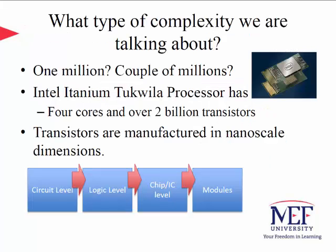So what type of complexity are we talking about? Well, an Intel Itanium processor with four cores has over two billion transistors. Transistors are manufactured in nanoscale dimensions. If you think of the manufacturing process bottom-up, circuit-level design is at a lower level than logic design because gates are made of transistors. A higher-level design uses logic gates to assemble a specialized chip or integrated circuit that serves a particular mission. Chips can then be used to create modules for various applications.